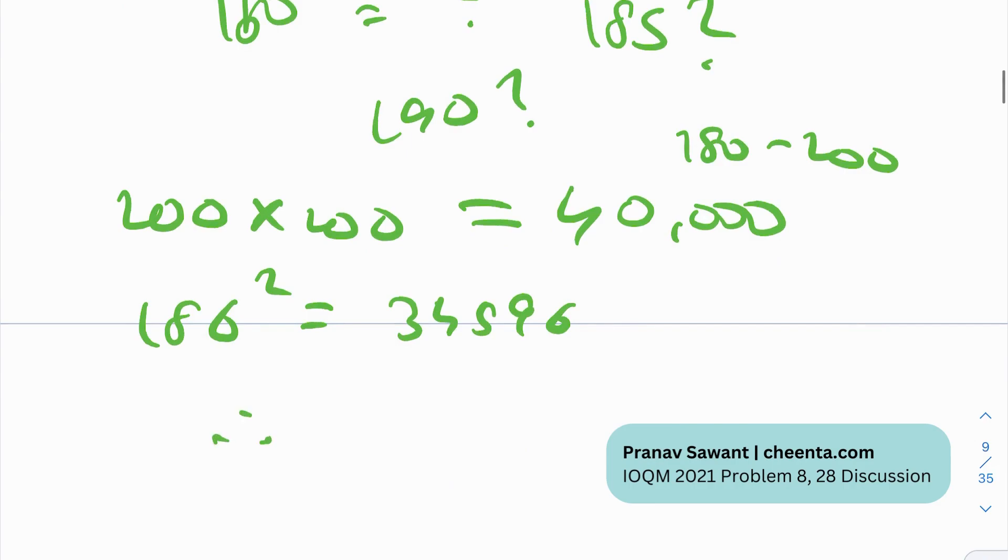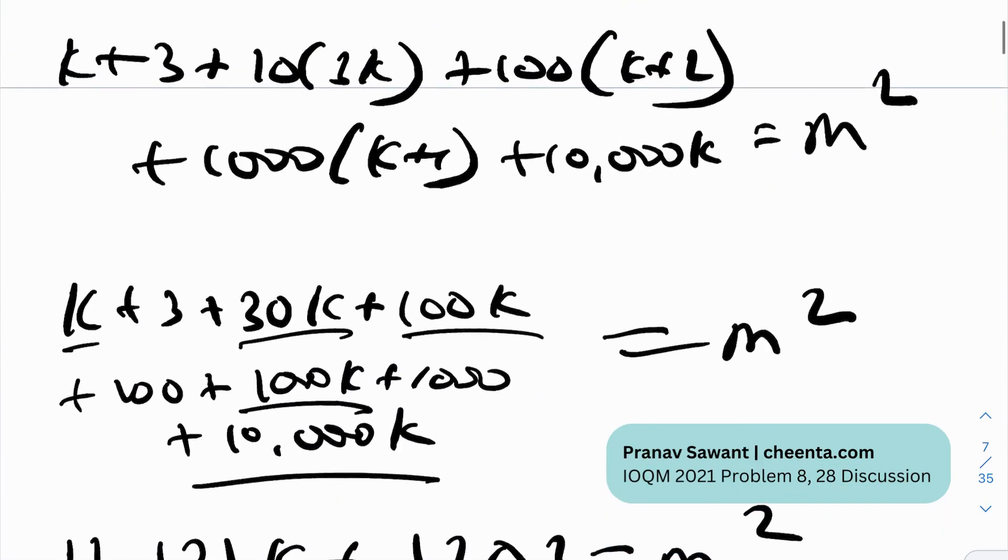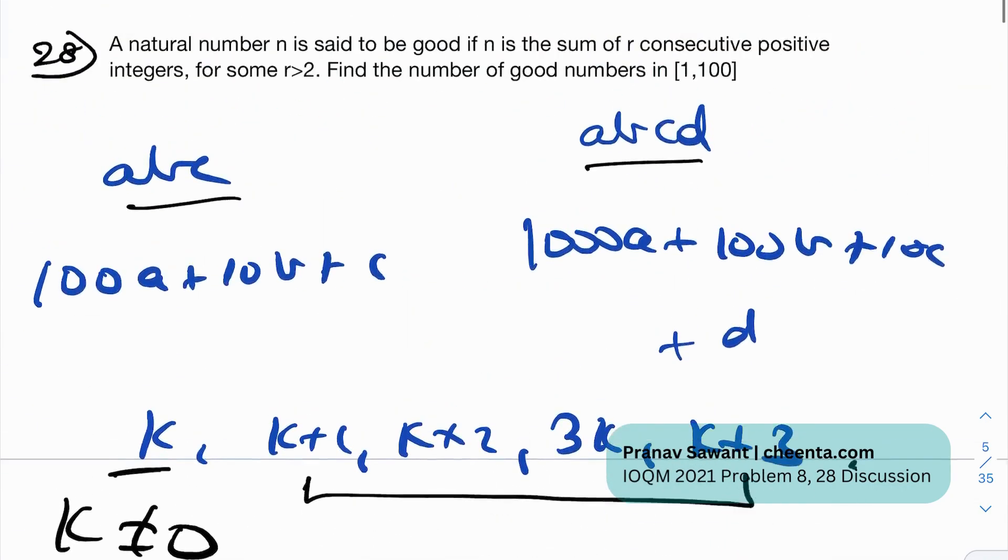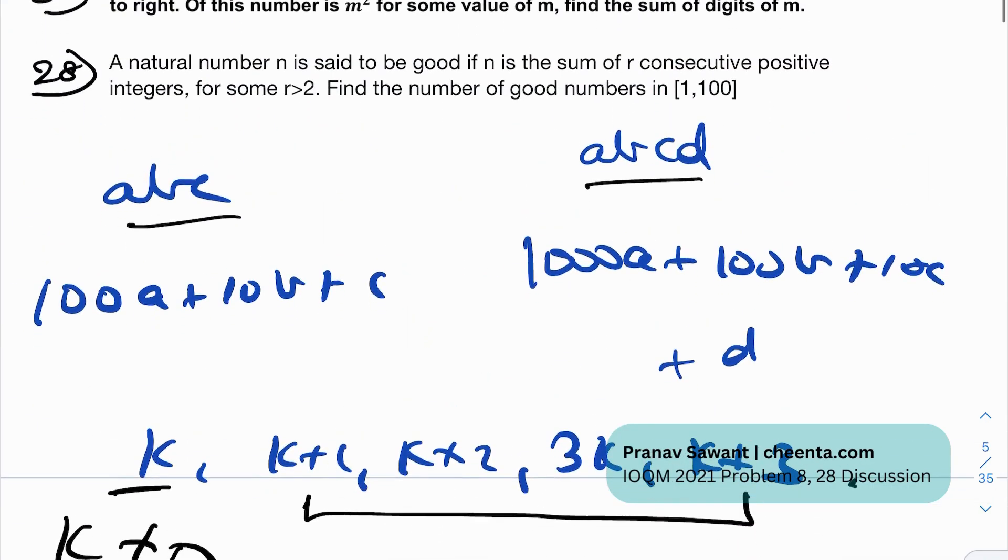But therefore, M is 186. And the sum of digits of M is 15. So that is how you would solve this problem. And that was a pretty elementary problem. All you really need to do was hang in there a little bit and do some calculations, do some math.